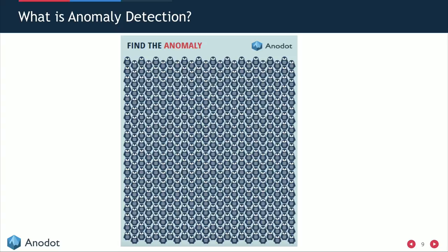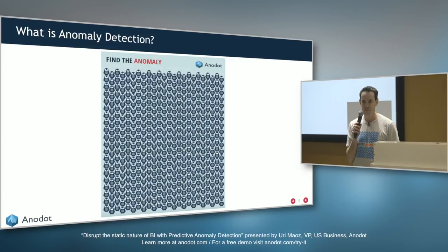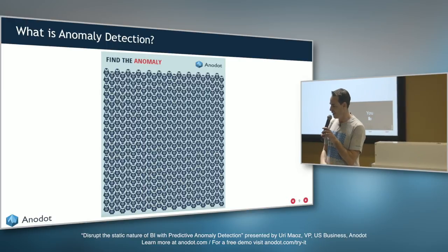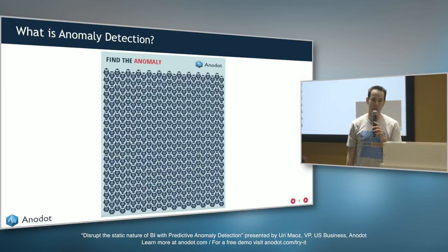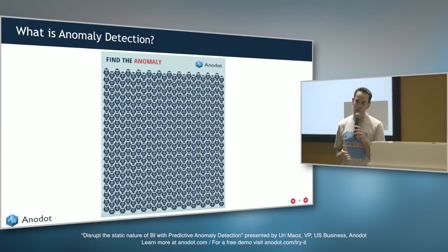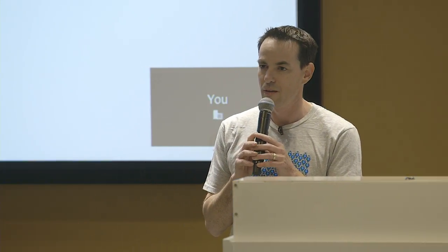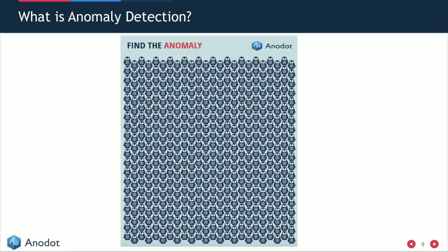So what is anomaly detection? Anomaly detection is the methodology of learning the normal behavior of the data and then alerting when something abnormal happens — similar to finding the anomaly penguin in a group.